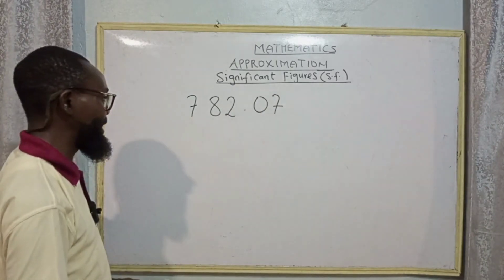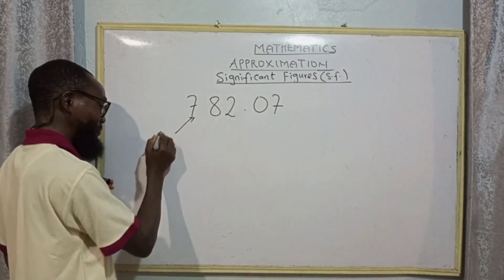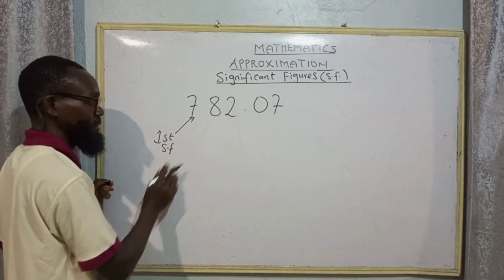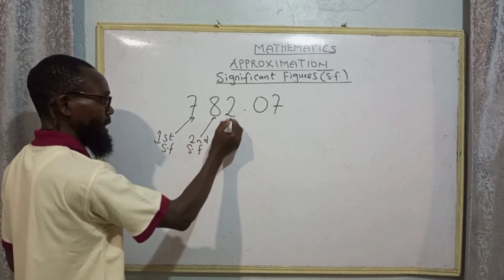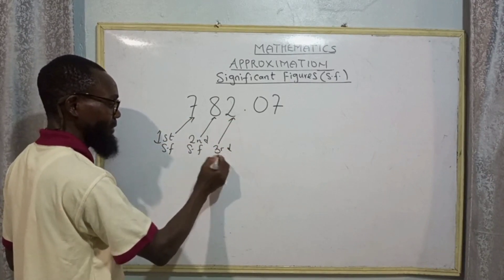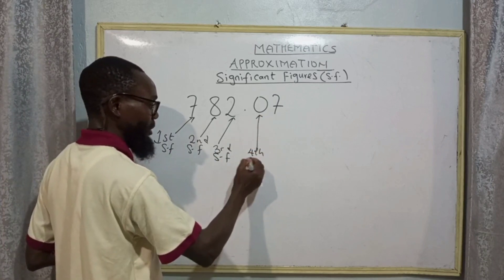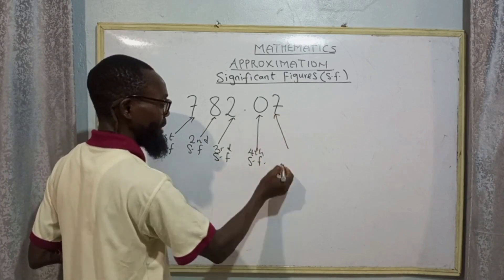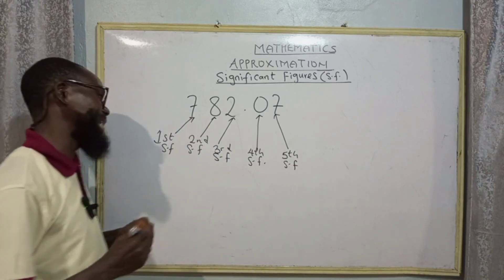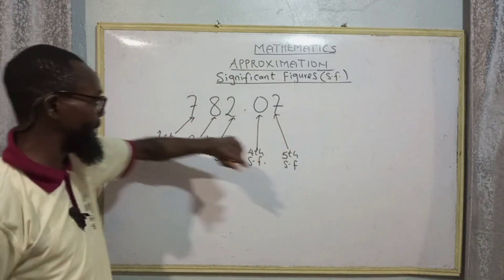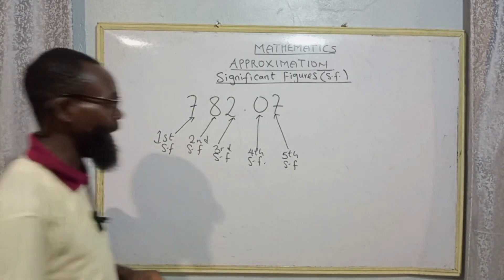The first digit that is significant is seven, so seven is the first significant figure. Eight is the second significant figure, two is the third significant figure, this zero is the fourth significant figure, and seven is the fifth significant figure. The first digit here is a significant figure which is non-zero.